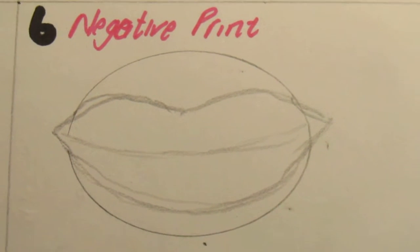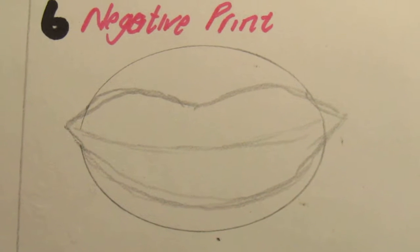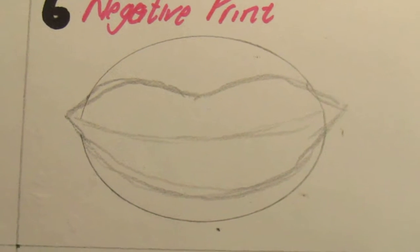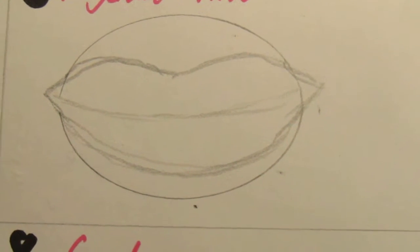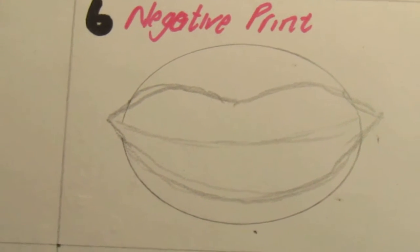Okay, so now the sixth technique we're going to learn is negative print. You can use this technique to make things on the page. You can use it for detail textures or for